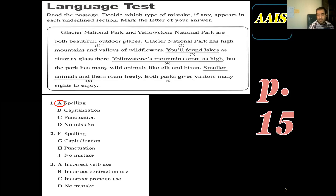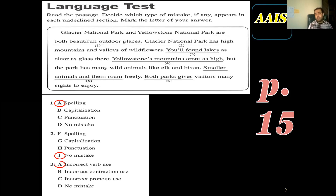Question two — what type of mistake? Glacier National Park has no mistake. Everything is perfect. But number three, there is a mistake you must know: 'you'll found lakes.' Even if you read this, it sounds a bit strange, because I'm using the wrong verb form. It should be 'you'll find,' not 'you'll found.' After modal verbs — will, can, may, must, and so on — you must use the base form of the verb. Find.